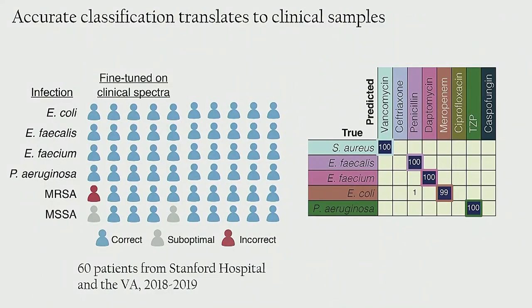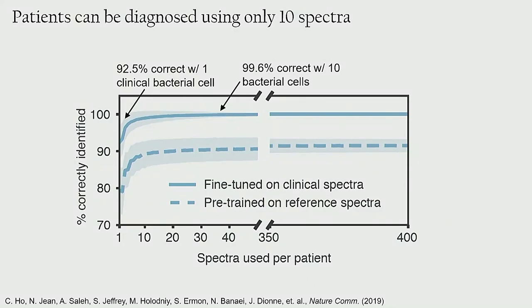We've done preliminary clinical trials where we've looked at clinical samples. In a first clinical trial corresponding to 30 patients, we did pretty well with the treatment groups, although we did have some misfires. But when we redid the experiment using this clinical data set as training, we improved the accuracy of our machine learning algorithm. We get above 99% accuracy when looking across all these patients, and importantly, we only need 10 bacterial cells to get accuracy exceeding 99% treatment accuracy.